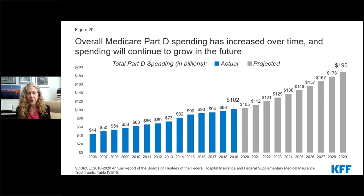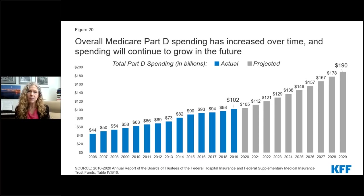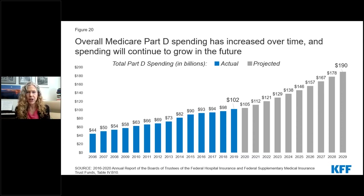Federal law currently prohibits the Secretary of Health and Human Services from engaging in drug price negotiations with drug manufacturers. That role is left to the private plans that administer the Part D benefit. Some recent cost and utilization trends have helped to constrain Part D spending growth, such as a shift in use from brands to generics, but other trends have accelerated cost growth, such as the introduction of new higher-cost specialty medications covered by Part D.